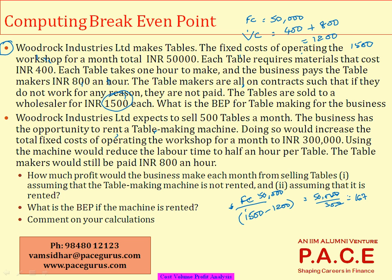Alternatively, assuming x number of tables are sold, the total revenue is 1,500x. The costs include a fixed cost of 50,000 and a per-table cost of 1,200, so it's 1,200x. Setting revenue equal to costs: 300x equals 50,000, from where x again comes out to the same calculation.